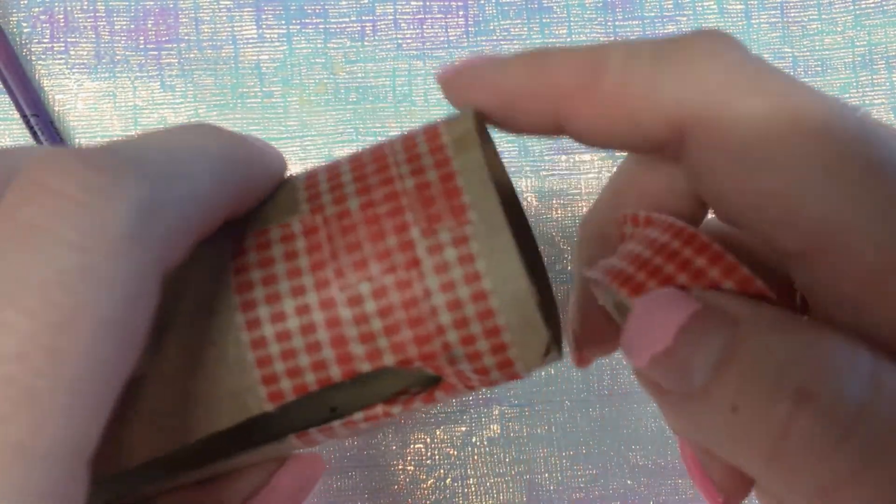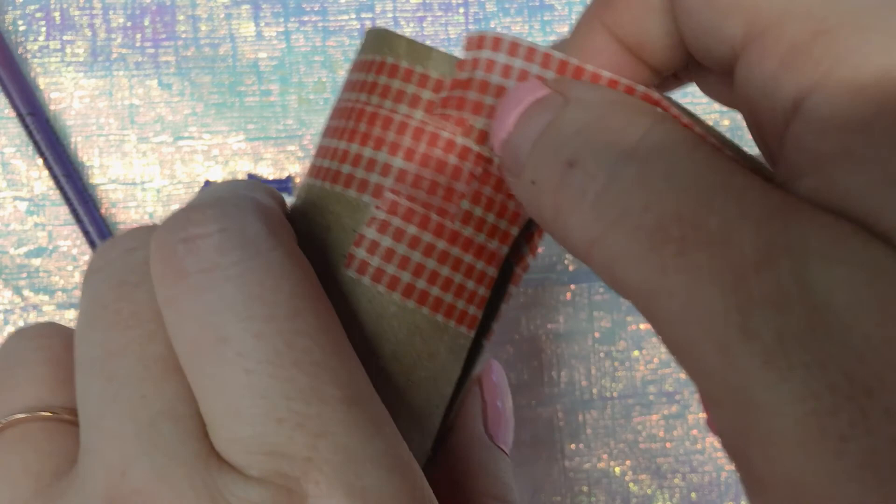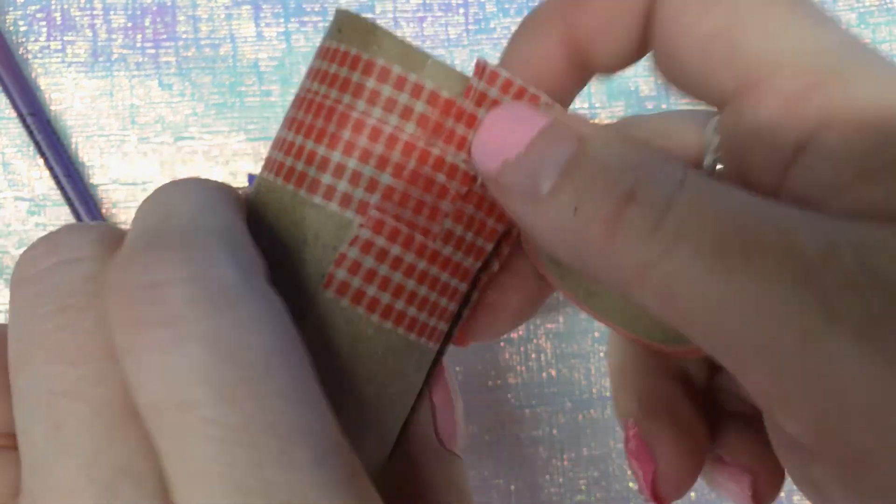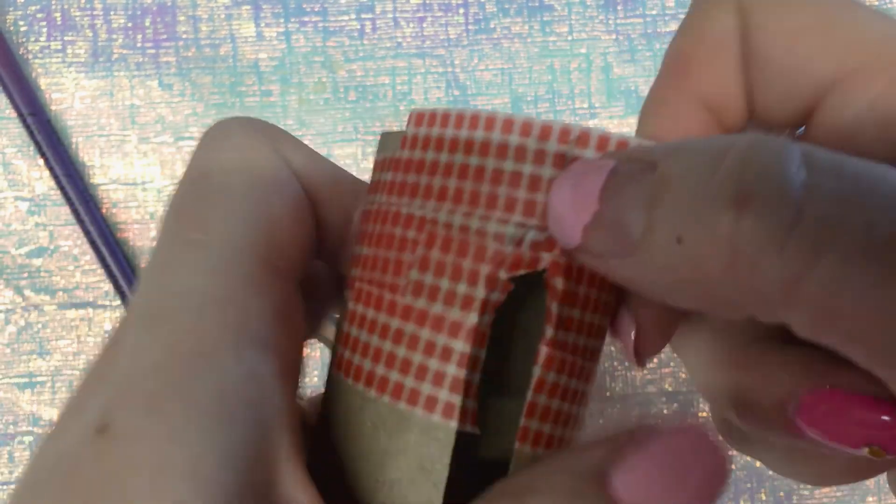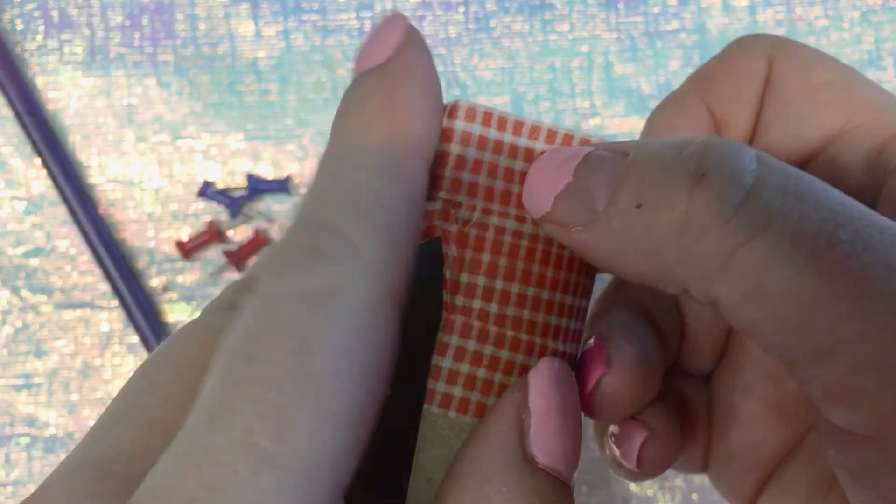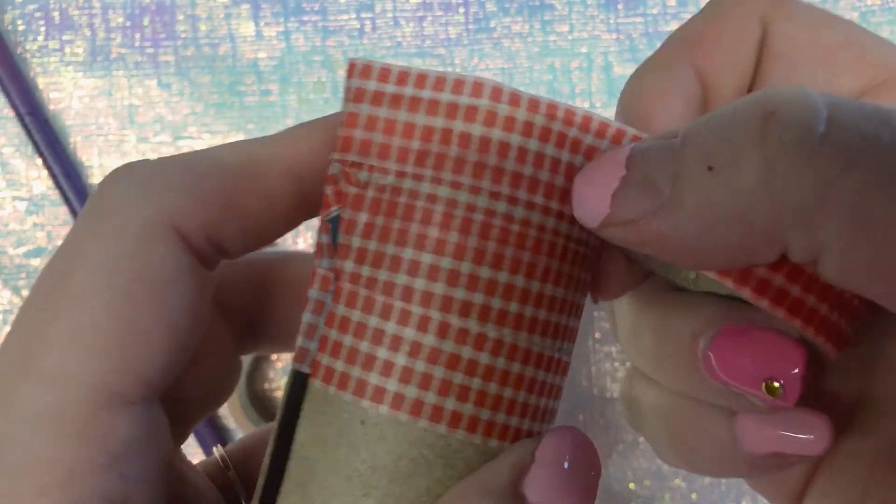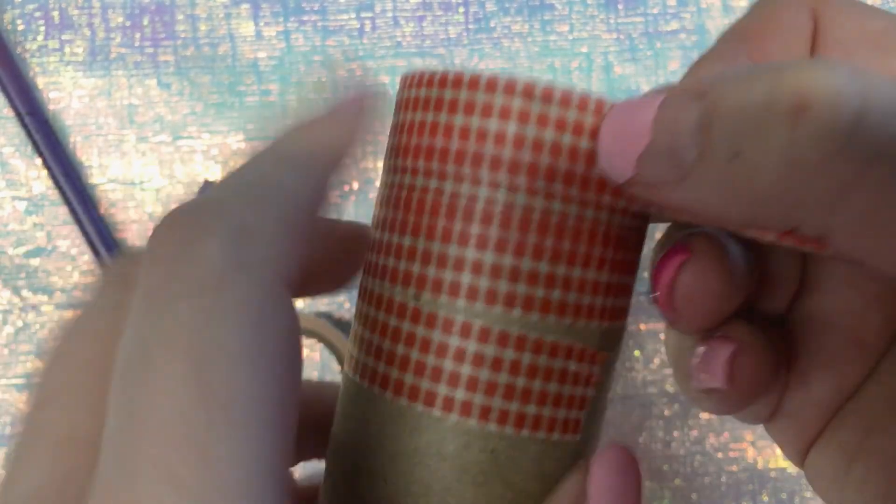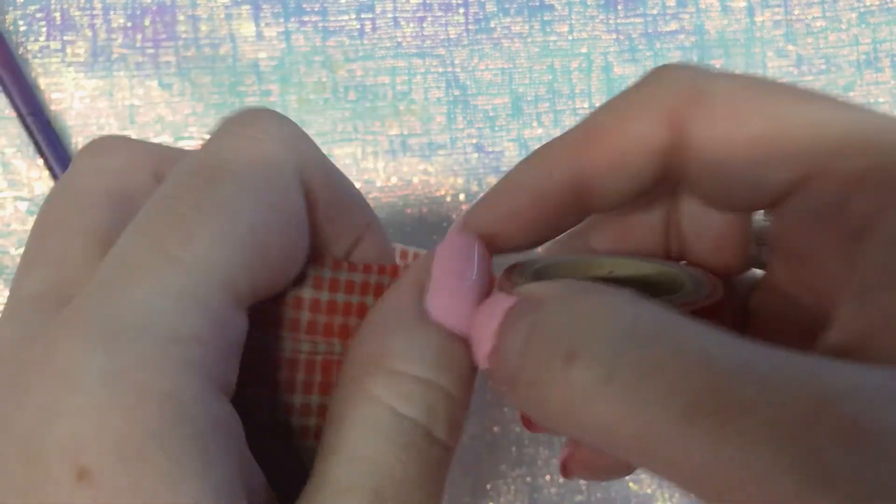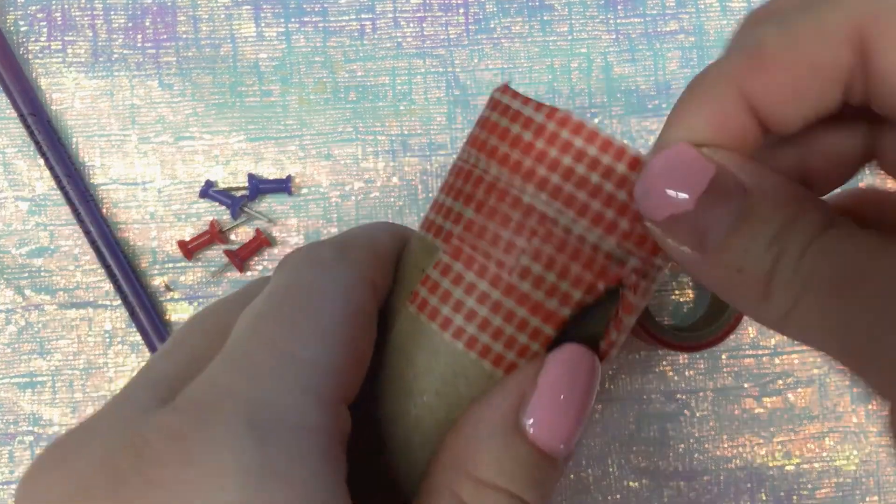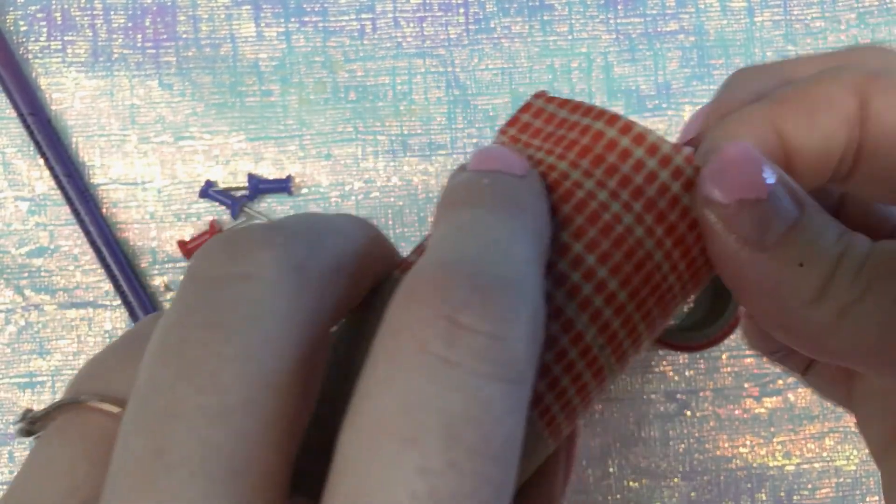You are then going to do the sides. Take your tape and put it on the edge, and then push it in so it seals on the inside. And then that is all sealed.